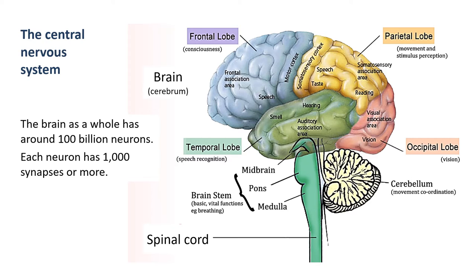The most obvious part of the central nervous system is the brain. The brain itself has about 100 billion neurons all packed in together. Each of those neurons has lots of branches - if you remember our pyramidal cells with all their little dendrites. Because of all these branches, there is the potential for about a thousand synapses per neuron. So each neuron can communicate either in or out with 1,000 other neurons, which makes the pathways in the brain extremely complex.